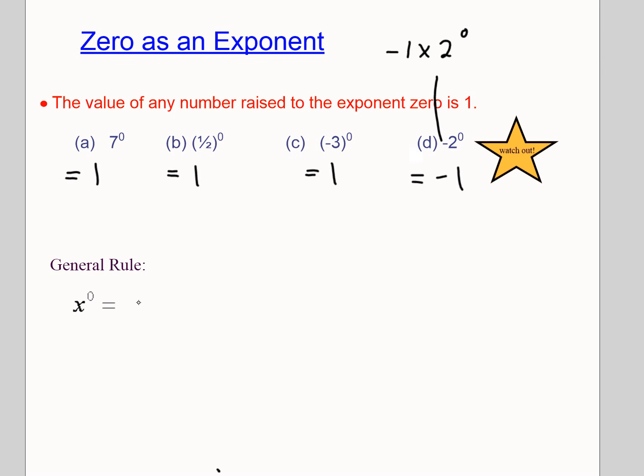Remember, anything to the exponent of 0 is 1. This one is just, it's not an exception to the rule. 2 to the 0 is 1. But when we multiply that by the negative 1, our answer becomes negative 1. So that last one is a tricky one.